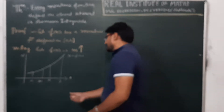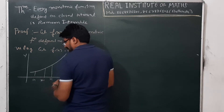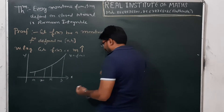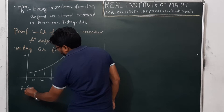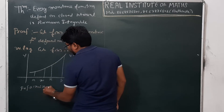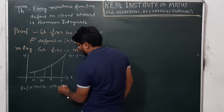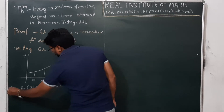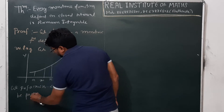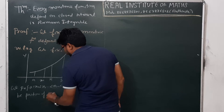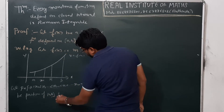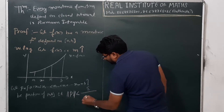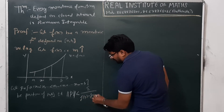For an increasing function, a small value maps to a small output and a big value maps to a big output. When we take the partition of [a, b], we choose a partition such that the norm of this partition is less than epsilon over f(b) minus f(a) plus 1.